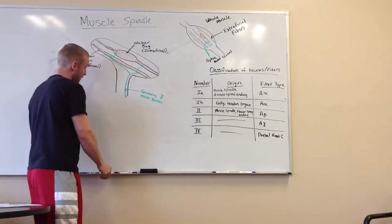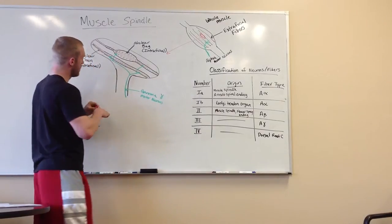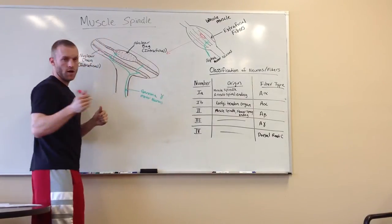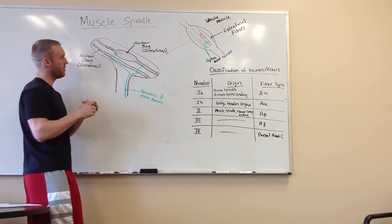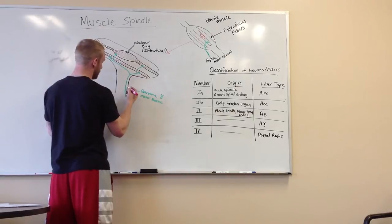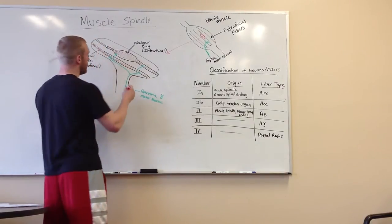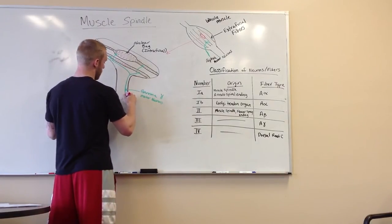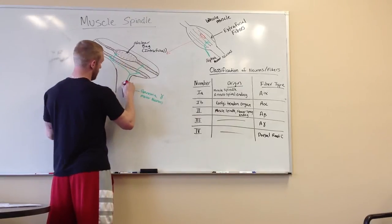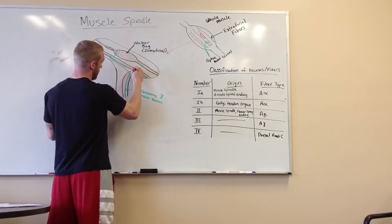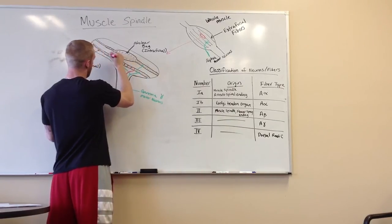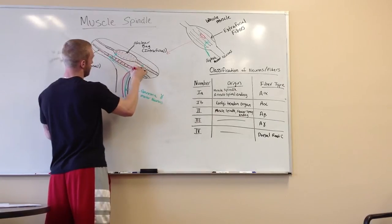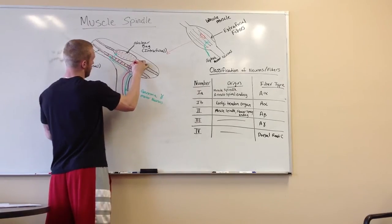Now the muscle nuclear chain and nuclear bag have two types of endings on the other, primary and secondary. So I'm going to draw our primary. It's going to be our pink color. And it's going to come in, and you already know what it does. And then I'm going to draw it coming over here.